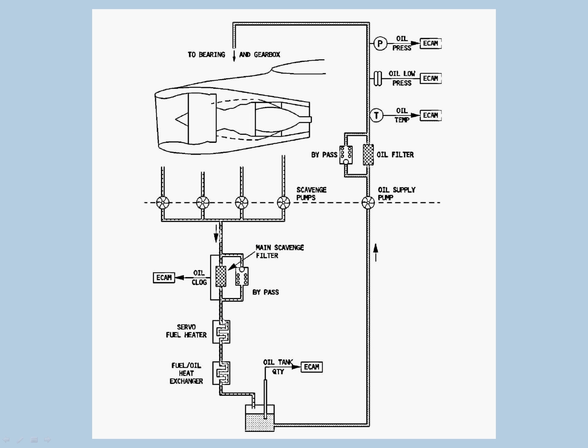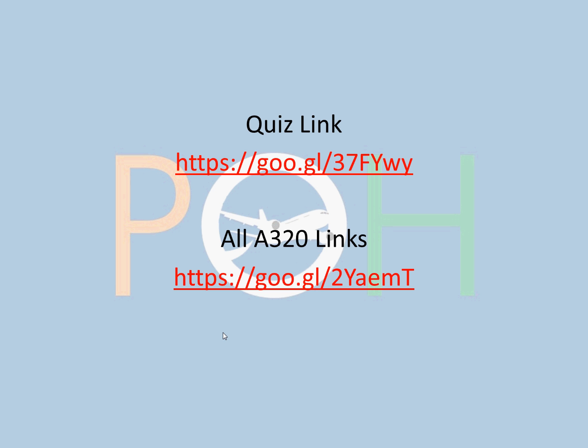There is the servo fuel heater and fuel oil heat exchange. The fuel exchanges heat with this oil - the fuel which is cold and the oil which is hot because it's passed through the engine. It will exchange heat, cool the oil back, and send it back to the reservoir. The servo fuel heater eliminates ice particles from the fuel.